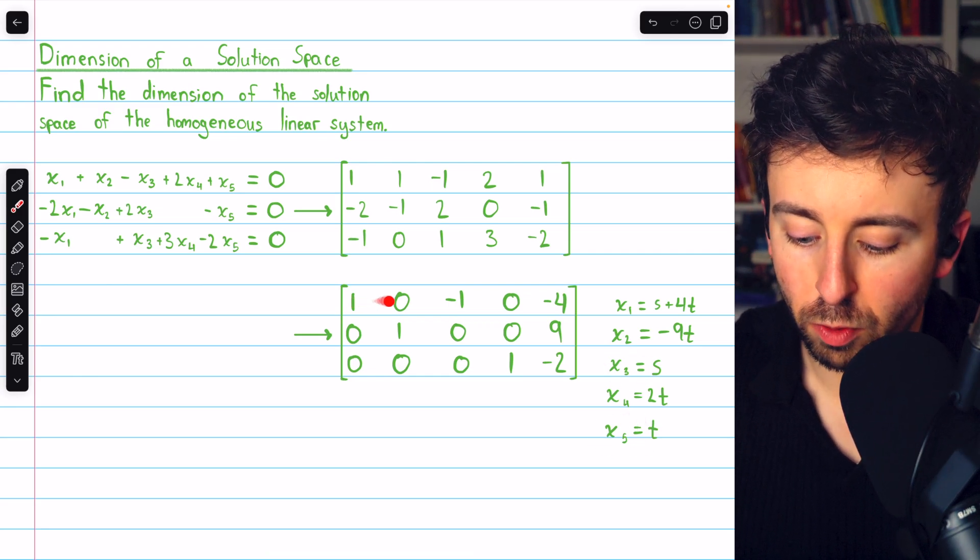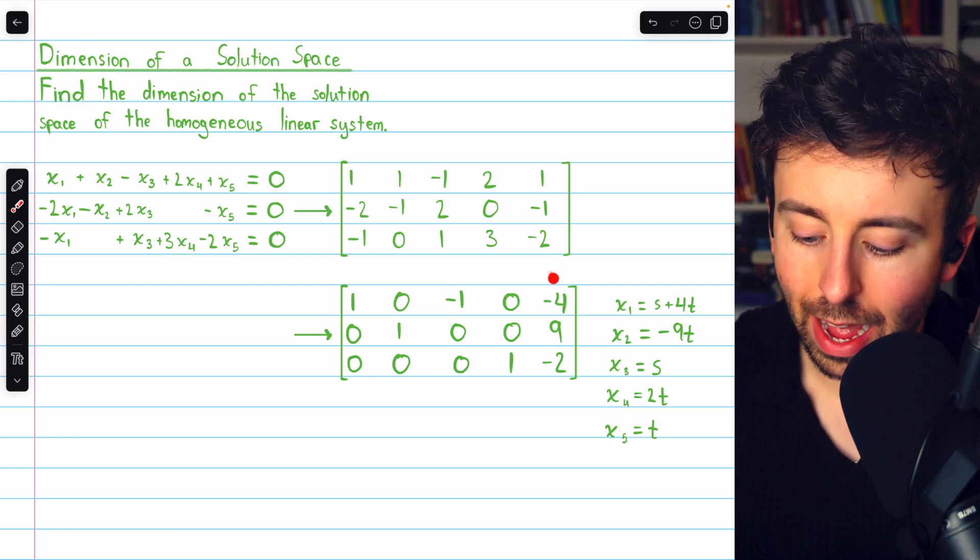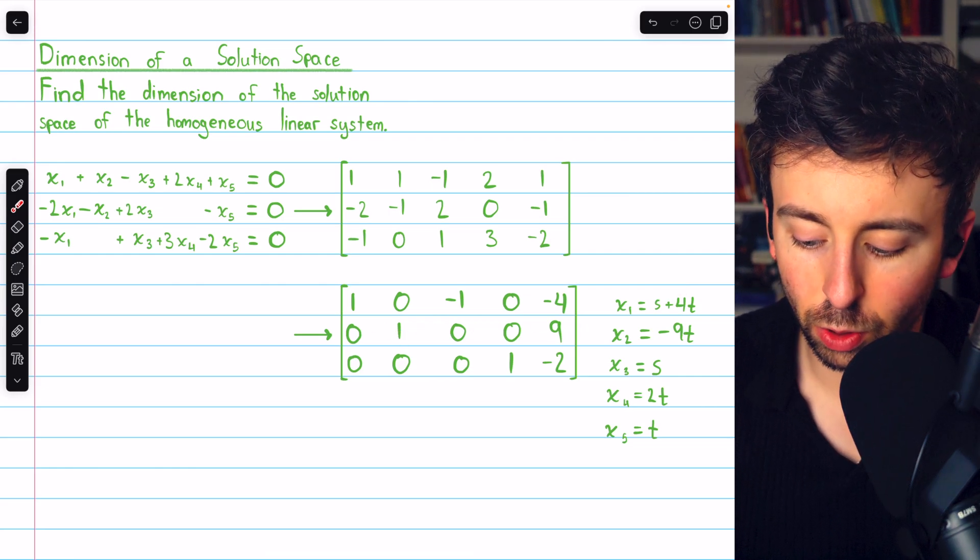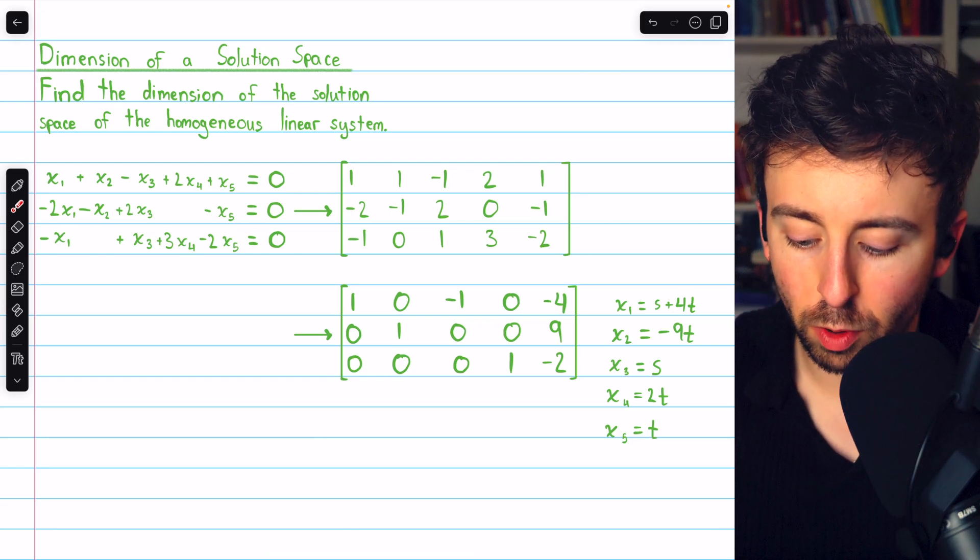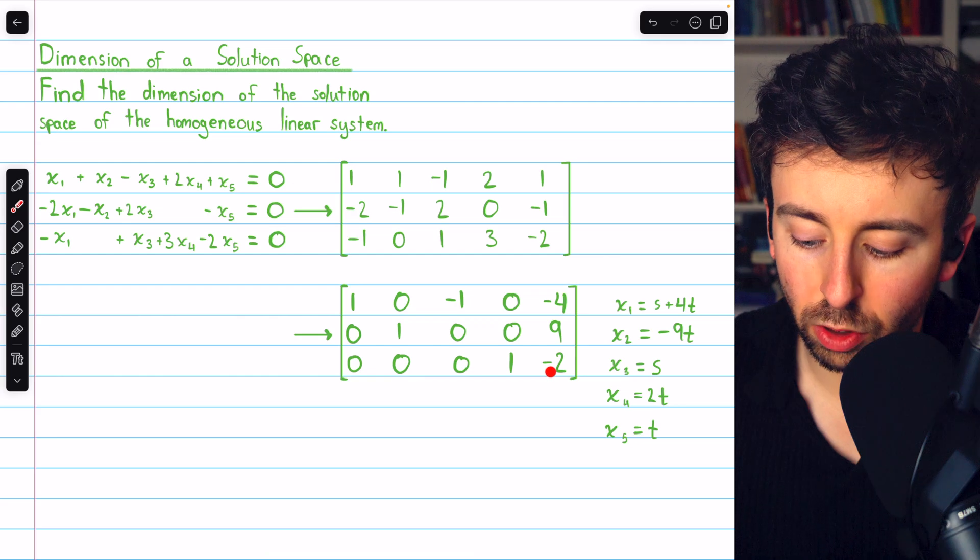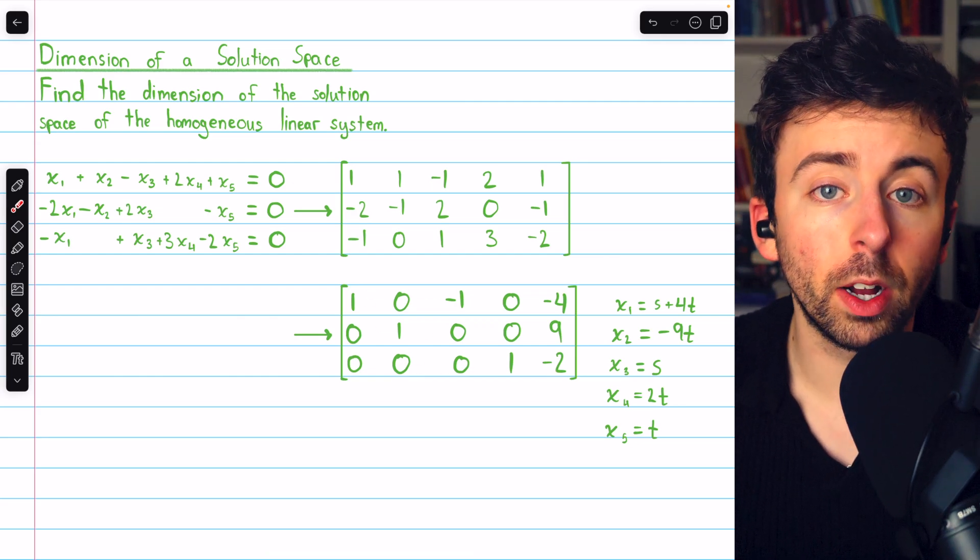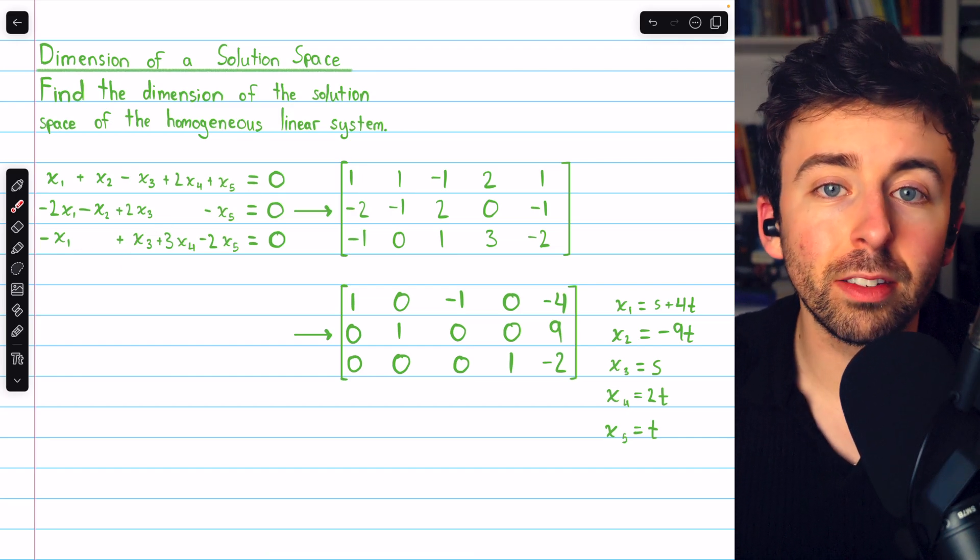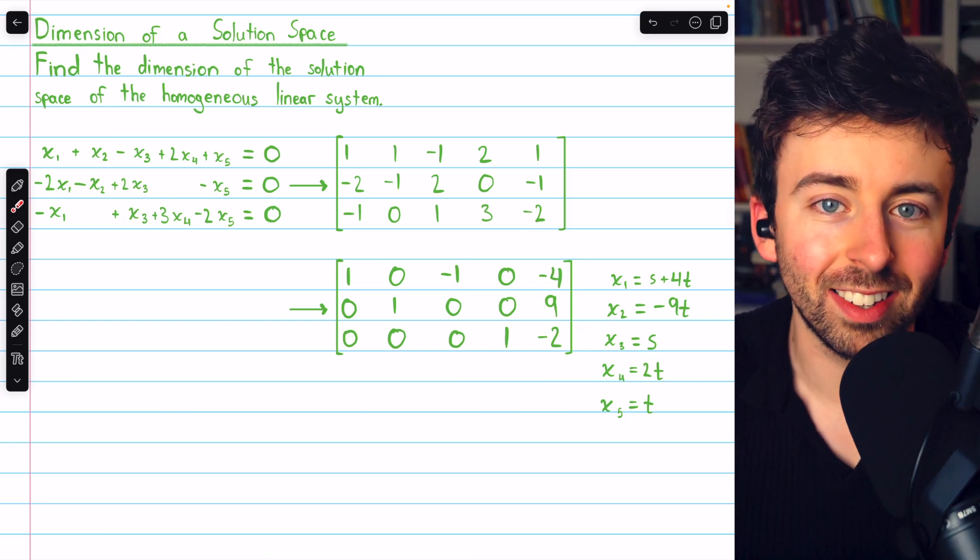Then, from row 1, we have that x₁ is equal to s plus 4t. From row 2, we have that x₂ is equal to negative 9t. From row 3, we have that x₄ is equal to 2t. Remember, each of these rows corresponds to an expression which is equal to 0. So we solve for the leading variable by just adding things to the right side.